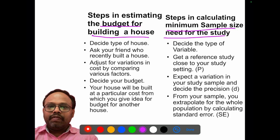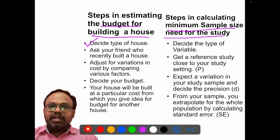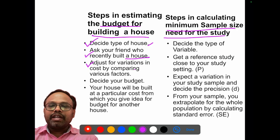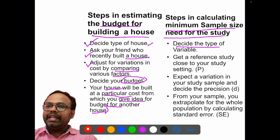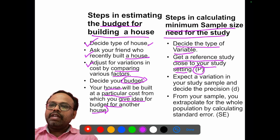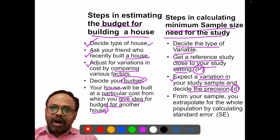When budgeting for building a house, we decide what type of house, what materials to use, how much cost will vary between each type of material, and other parameters. Then we ask a friend who recently built a house, adjust for variations, and finally decide on a budget. Similarly, for sample size calculation: we first decide the variable and its type, then get a reference study close to our setting and take the prevalence or mean from the previous study, expect a variation in our study sample, decide the precision or D value, and then extrapolate from our sample to the whole population by calculating the standard error.